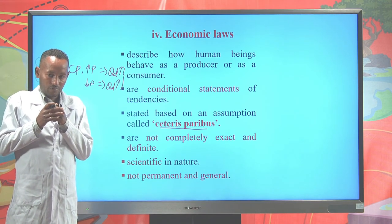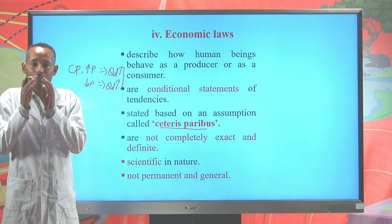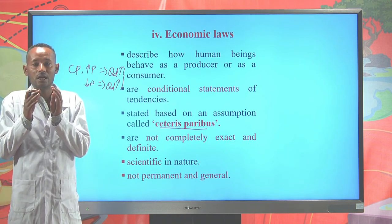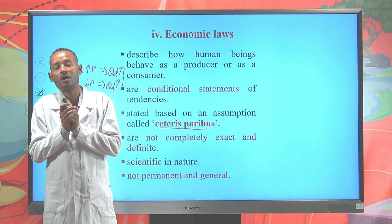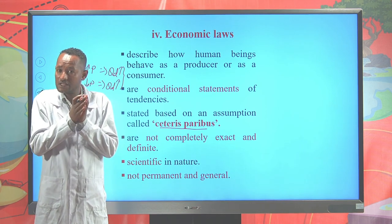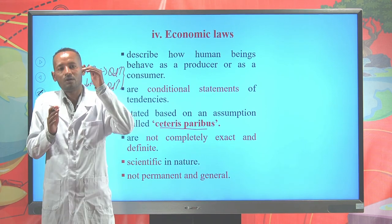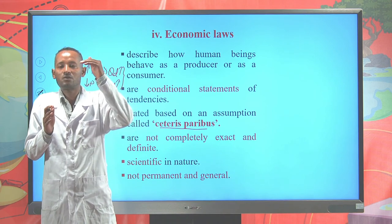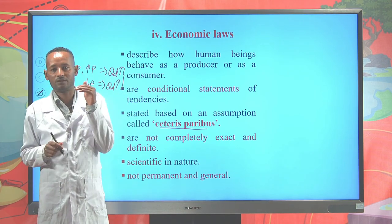If you still have 10 birr but the price of a single egg increases to 5 birr, and you spend your whole income on eggs, you get only 2 eggs. So, other things remaining unchanged — especially if income remains unchanged — with an increase in the price of egg, you will buy fewer eggs.